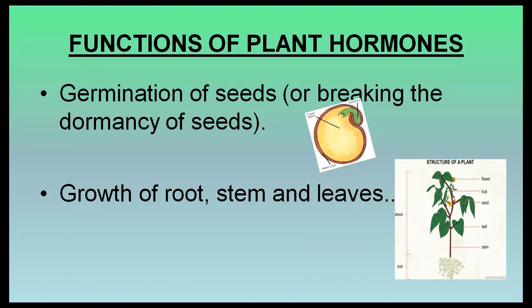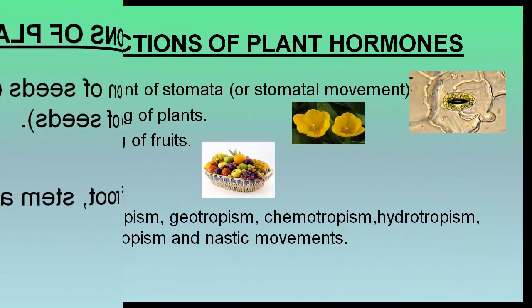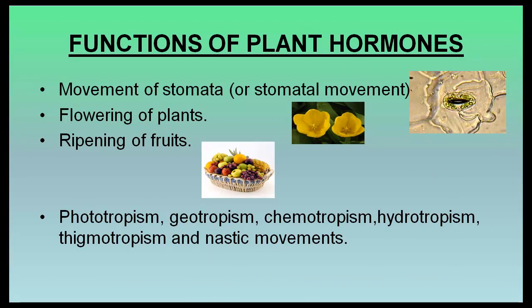This hormone helps in the movement of stomata, flowering of plants, and ripening of fruits. It also helps in phototropism, geotropism, chemotropism, hydrotropism, thigmotropism, and nastic movements.